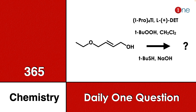Welcome to One Chemistry. This is the 365 Chemistry Series — daily one question for you. Here you have a linear chain alcohol, which reacts with an ether and alkene variety using titanium isopropoxide, DET, and peroxide in dichloromethane. Further reaction with thiol in base.